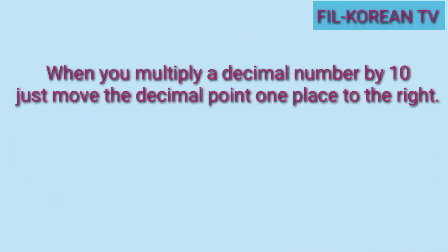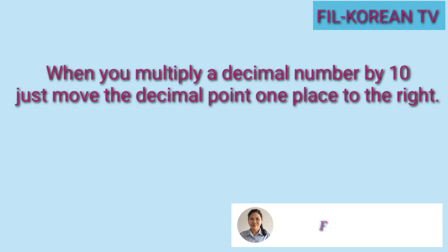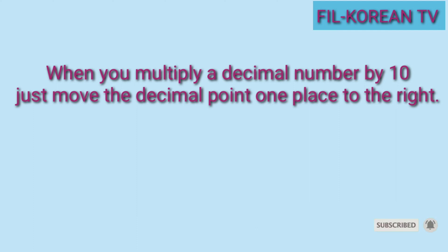Next, when you multiply a decimal number by ten, just move the decimal point one place to the right. Okay dito, dahil ang multiplier natin ay whole number na ten, ang movement ng decimal point ay pakanan. I-move natin ang decimal point ng number na i-multiply natin ng isang ulit pakanan.